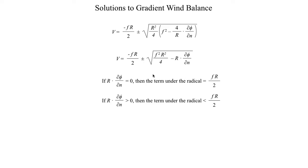Now let's consider a different case. Let's say that this product is positive. That means I've got a number minus another number, which is going to give me a number that's smaller than fR/2. But if I take this product and make it negative, then I get f²R²/4 plus some value, so this term of the radical is going to be some number that's larger than fR/2.